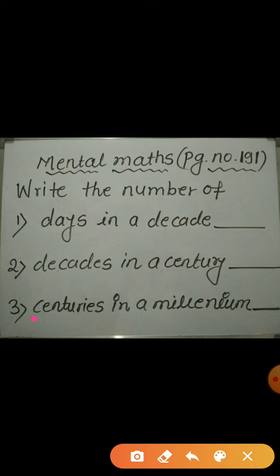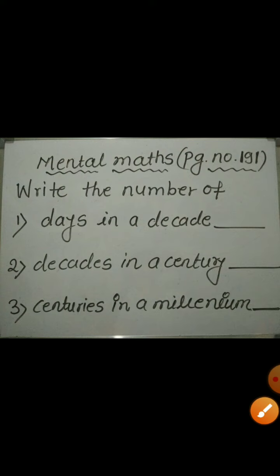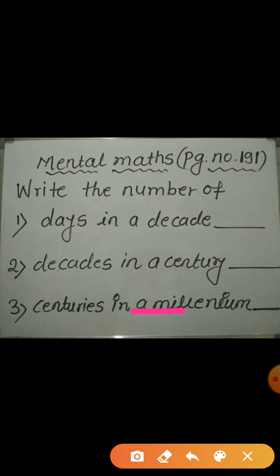And now the last one: centuries in a millennium. 1 millennium means 1000 years. And in 1000 years, how many centuries will come? 10 centuries. Because 100 years means 1 century, so 1000 years means 10 centuries.